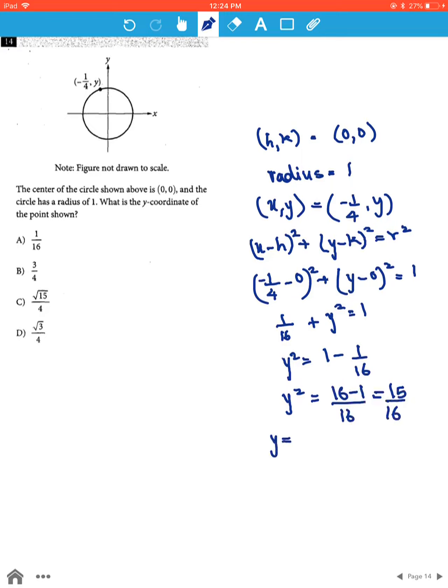Therefore y is the square root of 15 over 16, which is square root of 15 over 4. Therefore the y coordinate of this point is root 15 over 4, which is option C.